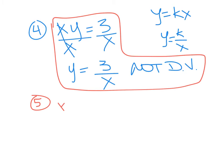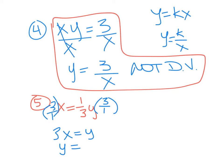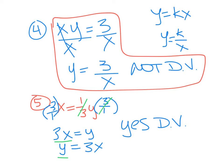Number five: x equals one-third y. Is the y by itself? No. So I multiply both sides by three over one — the flipped fraction — which cancels the one-third. I get 3x equals y. I can flip this over and say y equals 3x. Yes, this is direct variation. I did three over one times one-third, so it cancels. Then three over one times x is just 3x. I wanted y on the left side, so I just flipped the whole equation. Either way, it's still correct — the point is you got it into y equals kx format.